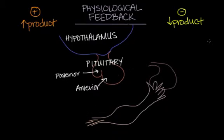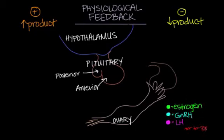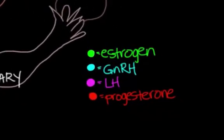Moving down, we have another organ called the ovary. Females have two ovaries located further down in the body, while the hypothalamus and the pituitary gland are up in the brain. I've also color-coded the four hormones we're going to talk about so we can keep them straight. The first is estrogen, the second is GnRH or gonadotropin-releasing hormone, the third is LH or luteinizing hormone, and the last is progesterone.